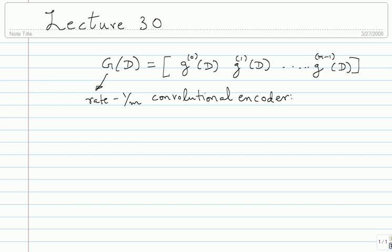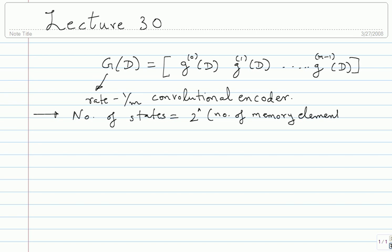So remember, I have not really defined what a convolutional code is — this is the distinction between the code and the encoder — but we will just bother about the encoder and not worry about the code as much. It is a strict way of properly defining it and the code becomes linear and all that. Number of states is very important; the number of states is 2 to the power of the number of memory elements.